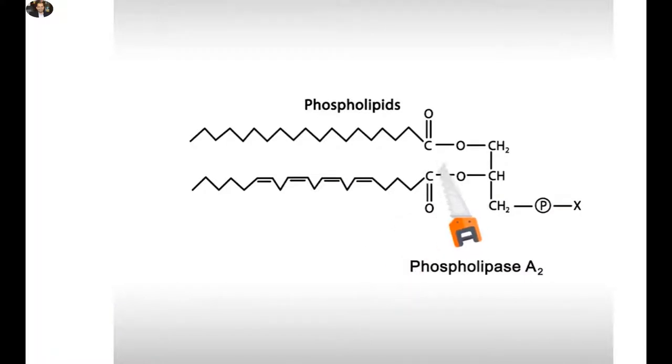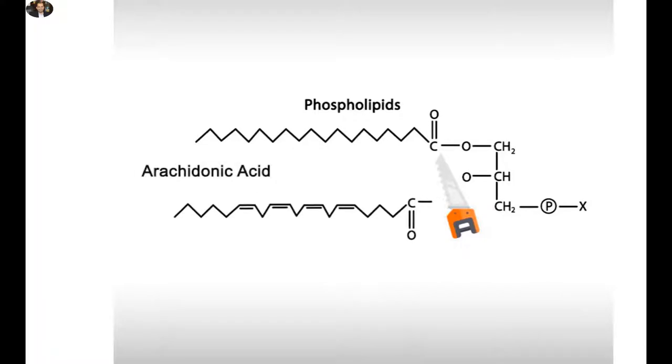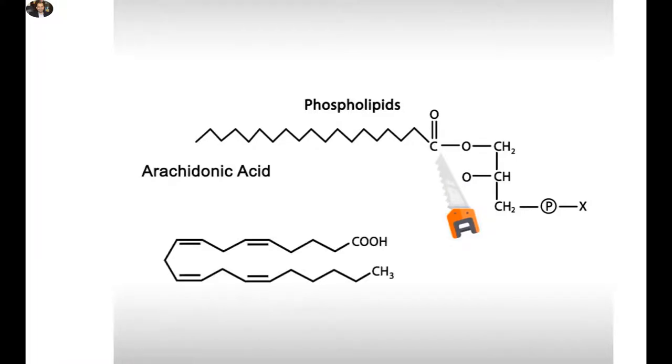where phospholipase A2 catalyzes the release of arachidonic acid from the phospholipid molecules. This 20-carbon polyunsaturated fatty acid is the main source for all biological eicosanoids.